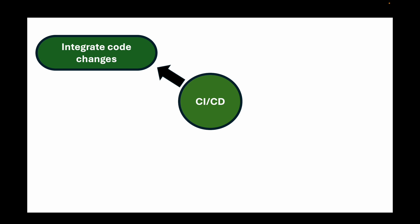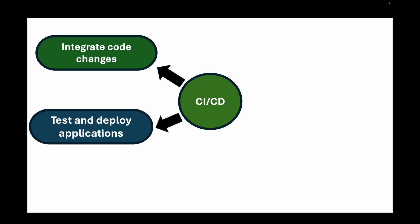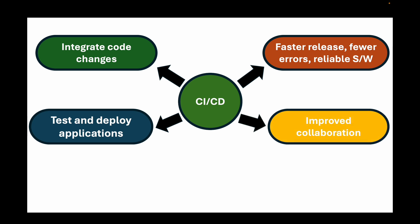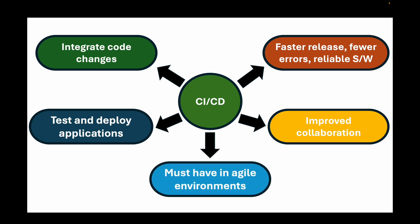Why are CI/CD pipelines so crucial in modern software development? CI/CD pipelines help you automate the process of integrating code changes, testing, and deploying your applications. This leads to faster releases, fewer errors, and more reliable software. Companies adopting CI/CD see improved collaboration between teams and quicker feedback loops — making it a must-have in agile environments.